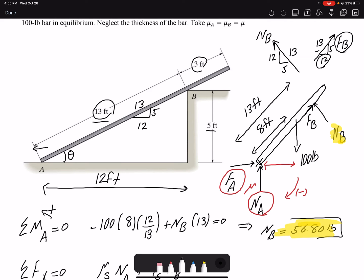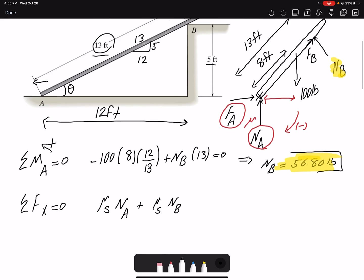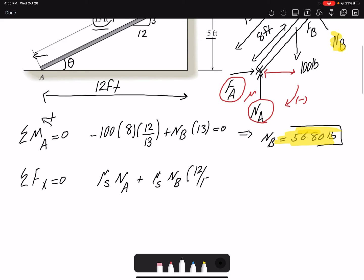And F_B, the horizontal component, would be 12 over 13. As well as N_B, you will have a component in the opposite direction of X, and 5 over 13 will give me the horizontal component. So I can replace N_B. I already found N_B: 56.8 here, 56.8. I don't have N_A, I don't have μ_s. I can't really solve this equation by itself.